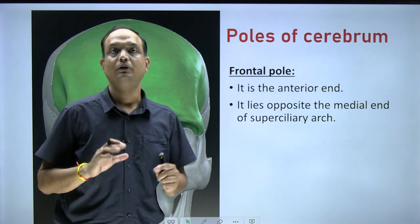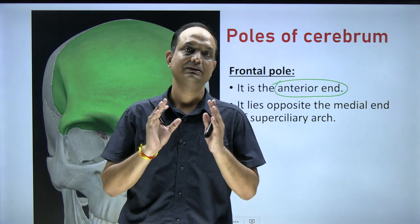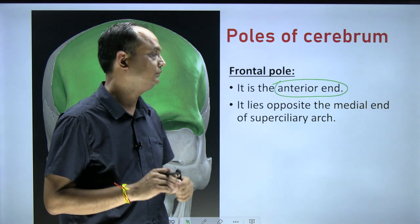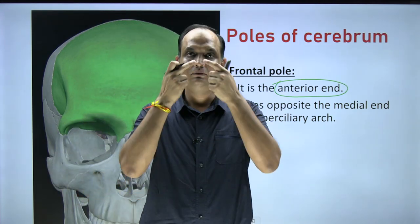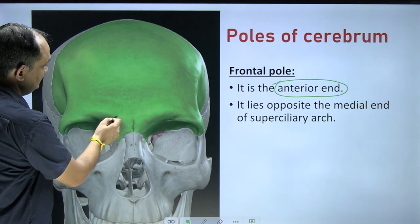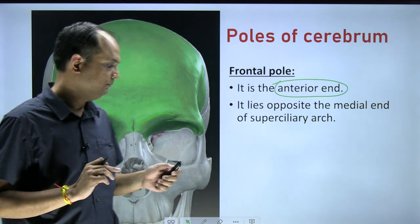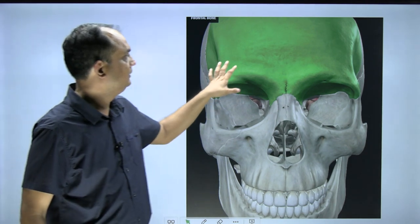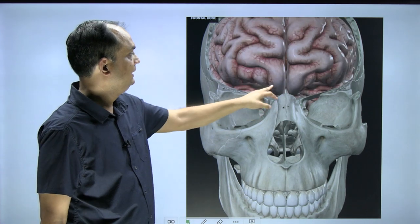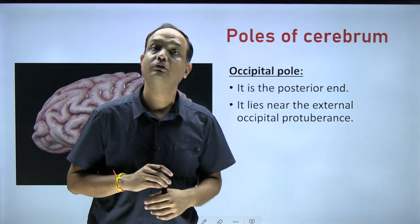The frontal pole is also known as the anterior end of the cerebral hemisphere. As the name suggests, it is the anterior end of the frontal lobe and lies opposite the medial end of the superciliary arch. When you see the norma frontalis, the superciliary arches are visible, and near their medial ends you will find the frontal pole. If you remove the frontal bone, you can see the frontal lobe and its anterior end, known as the frontal pole.